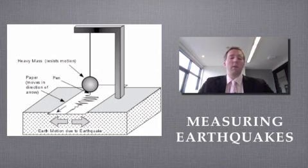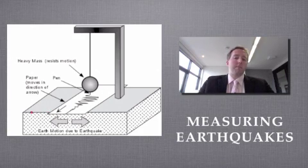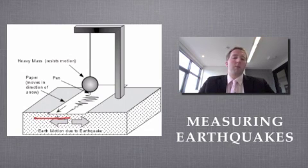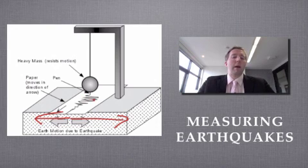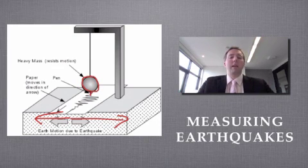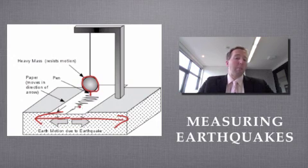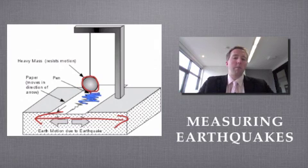So what happens is, when an earthquake occurs, this part of the seismometer will move, and this has some paper on it. So the paper will be moving left and right. But the ball, which has a pen on the bottom, stays steady. So because the earth and the paper is moving, the pen will end up drawing this squiggly line on the paper as the paper moves underneath it.